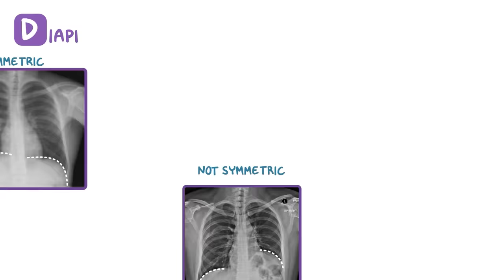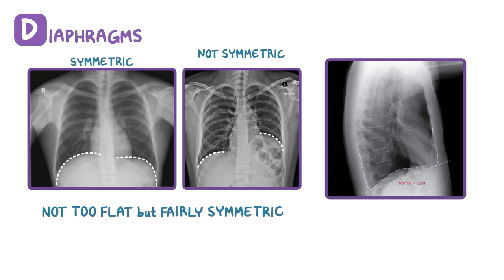D is for the diaphragms, which shouldn't be too flat but should appear fairly symmetric. You can assess flatness on the lateral view by estimating that the hemidiaphragm is 1.5 centimeters above the line connecting the costophrenic angle posteriorly and the sternophrenic angle anteriorly.